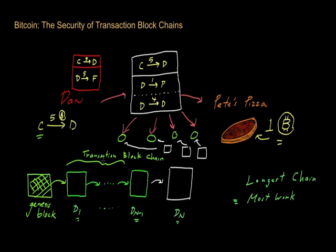And so what Dan has to do is, on his own, create a different transaction blockchain that contains just this second bogus transaction — the transaction to Fred — and that leaves out the other transaction to Pete, hoping that everybody else will start to accept this newer chain.